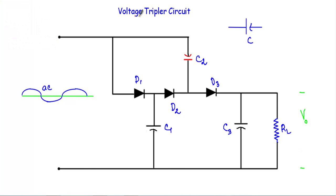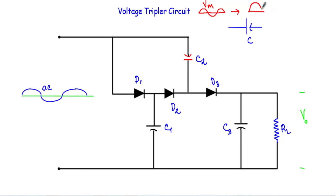In this video I will talk about the voltage tripler circuit. The voltage tripler circuit is a circuit which will give us an output voltage whose peak value is three times the peak value of the input voltage. If I apply a sinusoidal waveform with peak value Vm, the output DC voltage will have a maximum value of 3Vm. That is why this is known as a voltage tripler circuit, and this is the circuit arrangement of it.